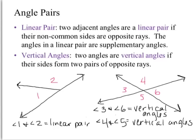Two adjacent angles are a linear pair if their non-common sides are opposite rays. The angles in a linear pair are supplementary angles — that means the sum of those two angles is 180. So let's look at this non-common side. I have a linear pair right here. This is the common side. The non-common side is right here. Angle 1, here's my non-common side. Angle 2, here's my non-common side. They are opposite rays.